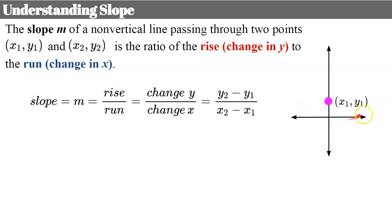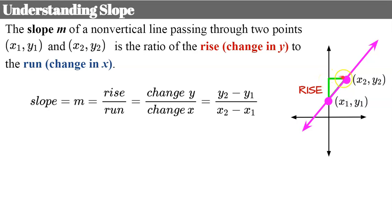Here's a point on a graph — we're calling this point one, x-coordinate one, y-coordinate one. Here's our second point, and we're going to connect those with a line. To find the slope, I'm going to rise and run from one point to the other. The distance I rise is my numerator, over the distance I run as my denominator. The rise is found by subtracting the two y-coordinates, and the run is the distance between the two x-coordinates.